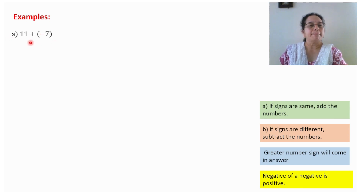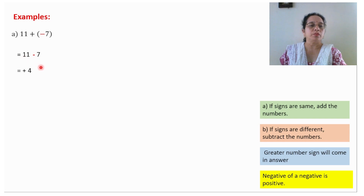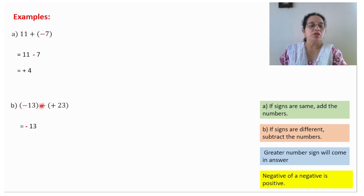Here we can see 11 plus and minus, so first we need to simplify this. There is only one negative number, it means this will be 11 minus 7. Now signs are different, subtract the number — 11 minus 7 will be 4 — greater number sign will come in the answer: plus 4. Here one sign is negative, so this will become minus 13. Both are positive — positive of a positive is positive — 23. Signs are different, subtract the number — 23 minus 13 will give you 10 — greater number sign will come in the answer: plus 10.